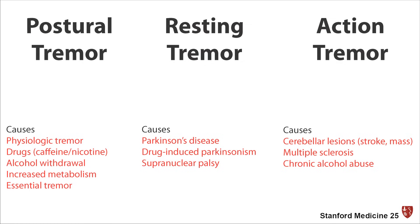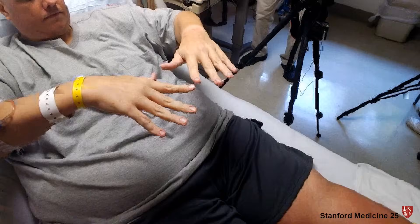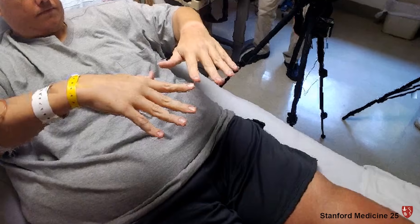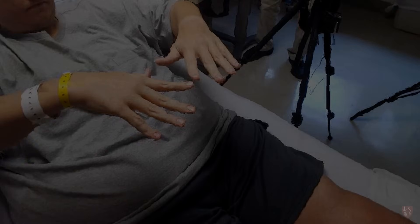One last thing to mention: sometimes many of these causes of tremor can present with overlap. For example, a patient with essential tremor that's very severe can present not only with postural tremor, but also resting and/or action tremor. However, together with a good history and exam, you'll have a great chance of finding out the cause of your patient's tremor.